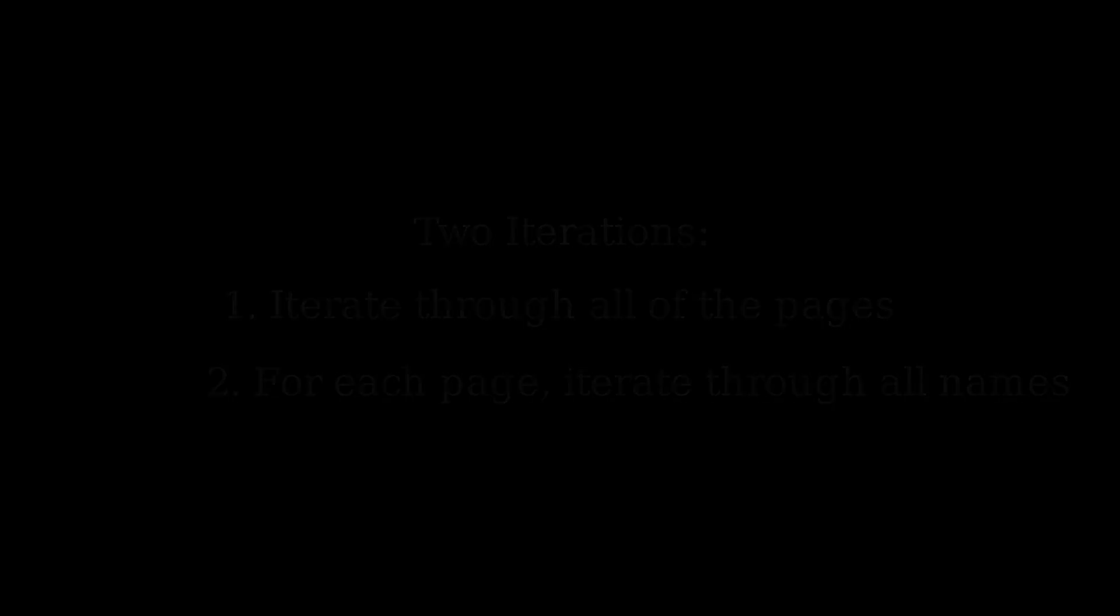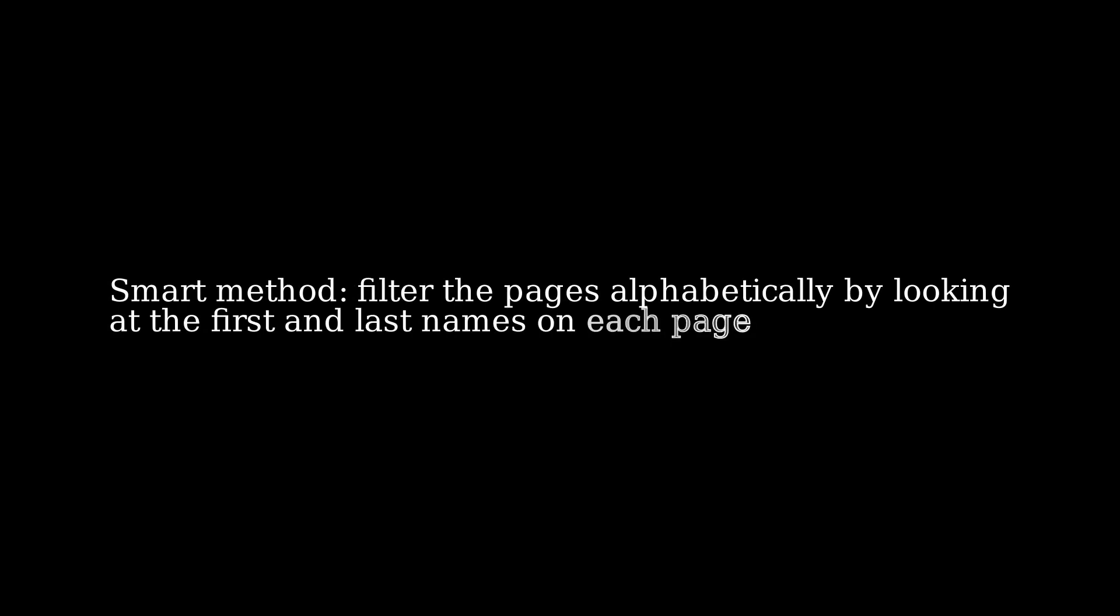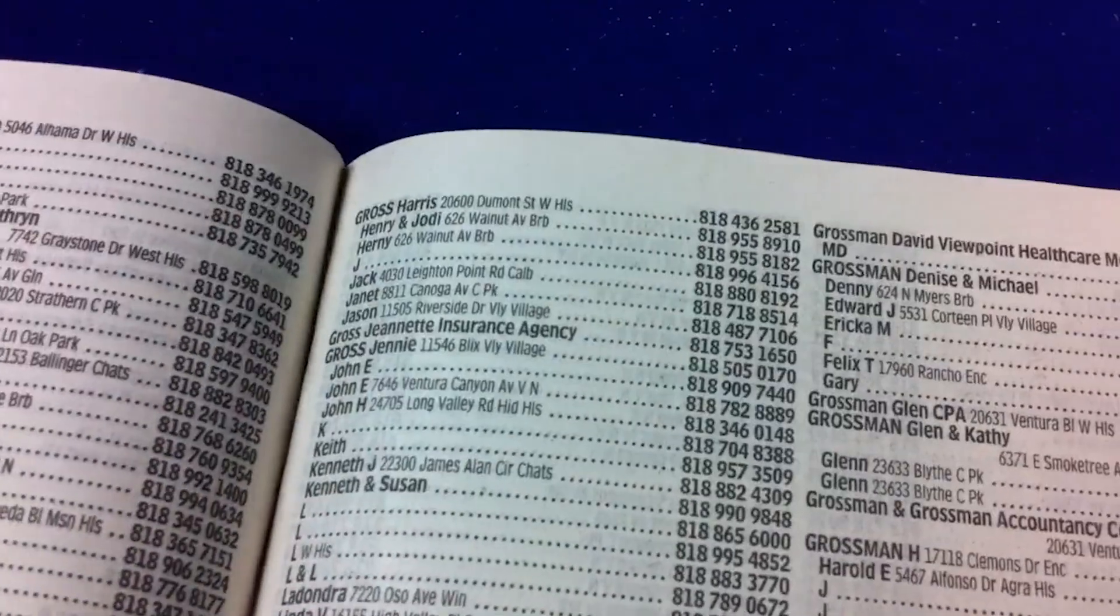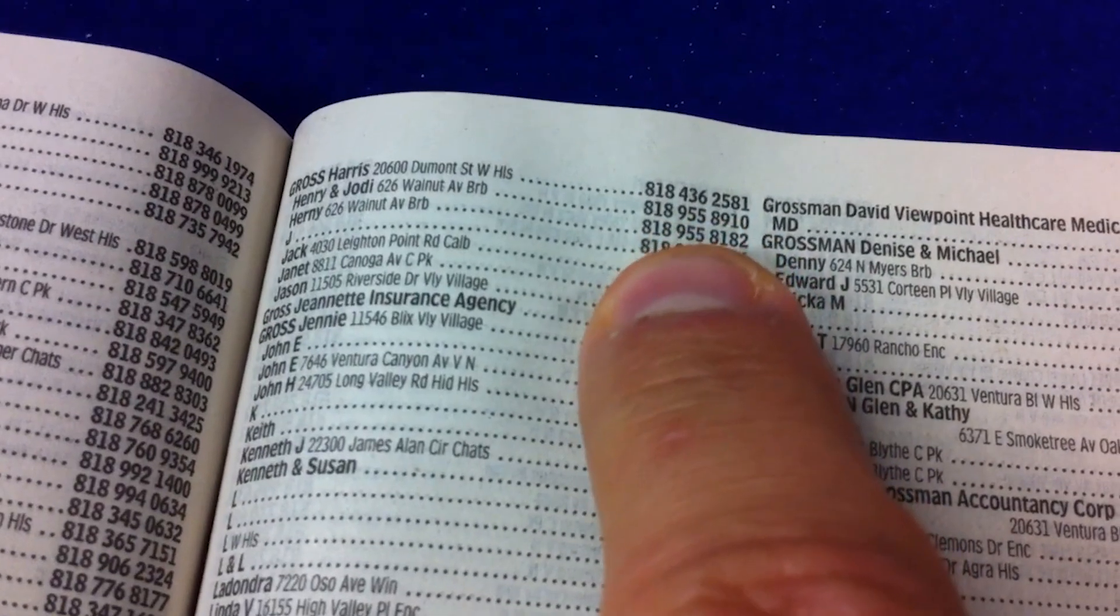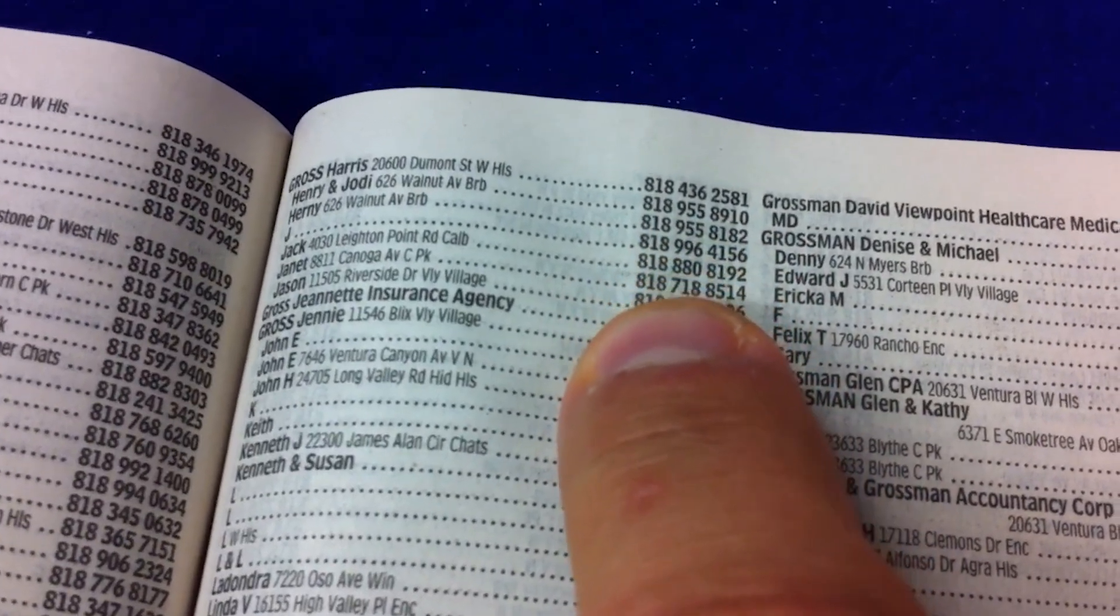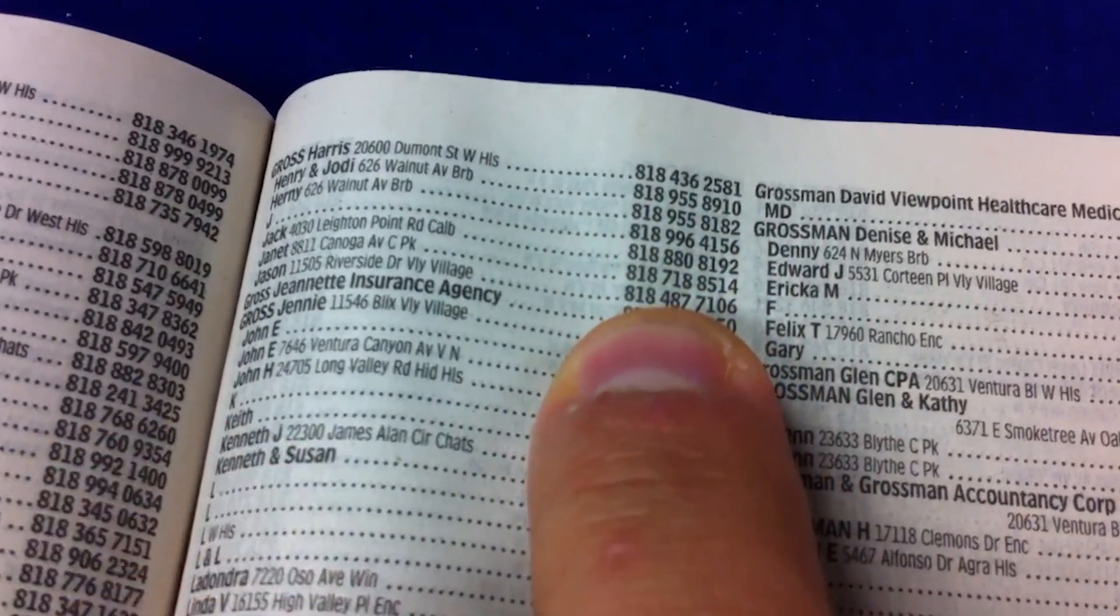First, you iterate through all the pages, and on each page you iterate through every name on that page. A smarter algorithm that improves upon this would be to look at the first and last name on each page and see if your friend's initials would fall into the range on that page, since pages are alphabetized. If they do, then they're on that page. If not, you can immediately discard it, and that saves the second iteration, meaning going through all the names on that page. In this way, you would save a lot of time, but you'd still have to iterate through all the pages.